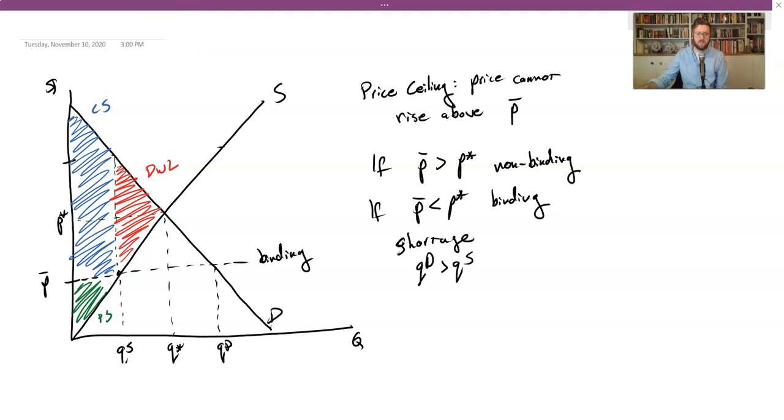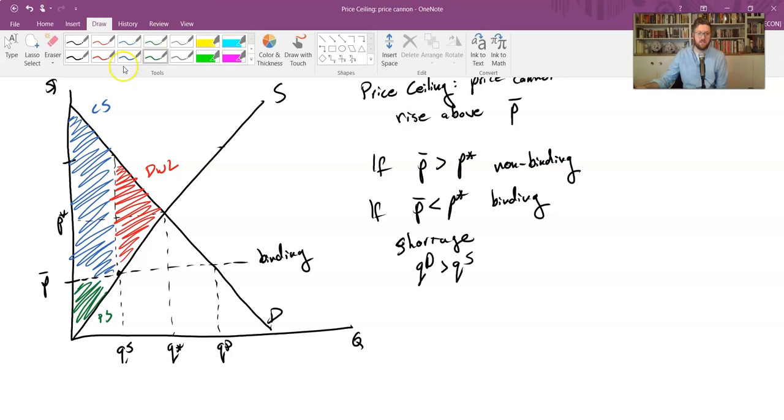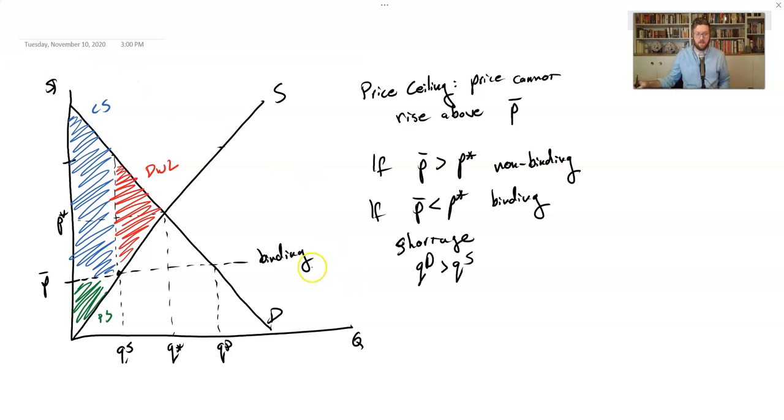Now who benefits and who loses? We can see that some of the consumers benefit—the ones who are able to purchase the good get it at a lot lower price, so they're really happy. But some are worse off, and the firms are worse off. They get a lower price than they would normally get.